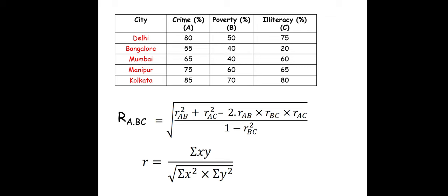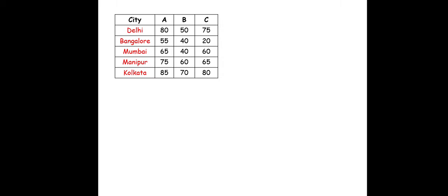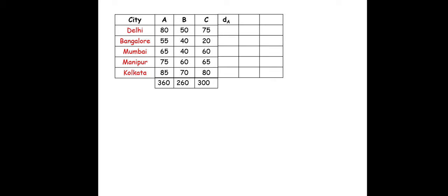We also have the formula for Karl Pearson's coefficient of correlation: small r = summation of XY divided by square root of (summation of X² × summation of Y²). Using this small r we will calculate capital R. We have variables A for crime, B for poverty, and C for illiteracy. The sum of A is 360, summation of B is 260, summation of C is 300. We will add columns: dA, dB, dC, dA², dB², dC².